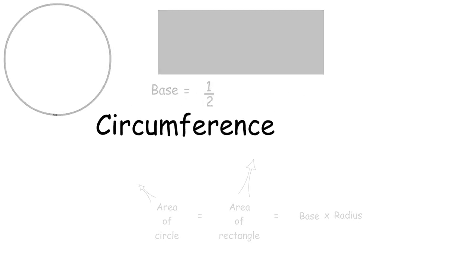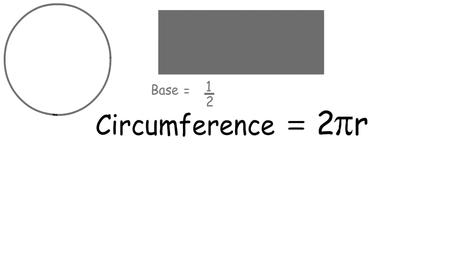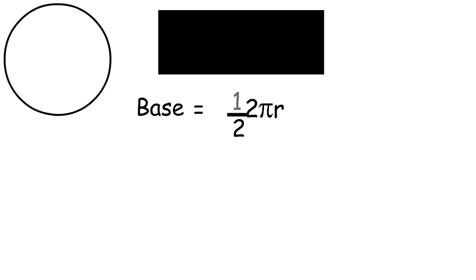Remember that the circumference is equal to 2 pi r. When we combine it with one half, the 2's cancel out, and base is equal to pi r.